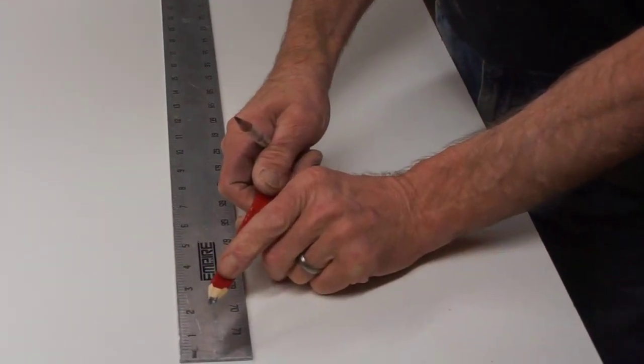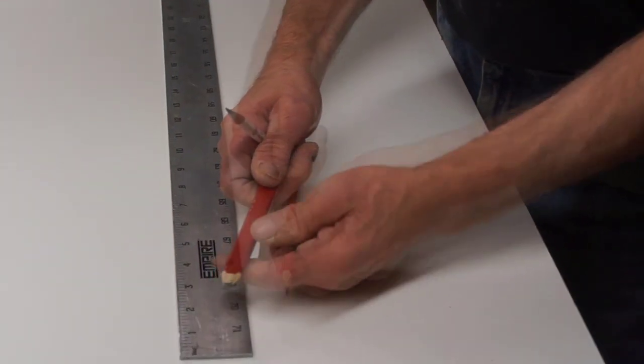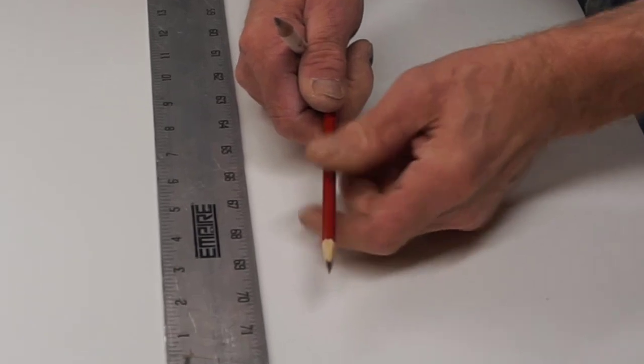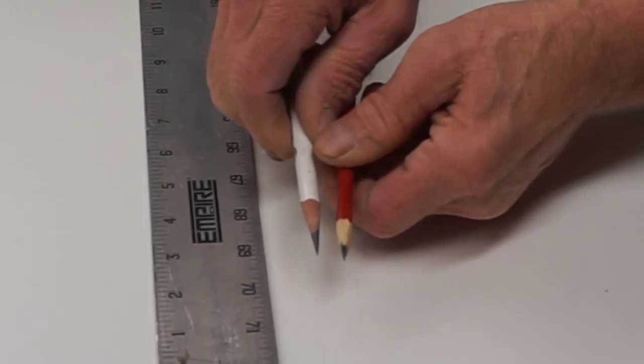Even though the carpenter pencil lead looks thick and stubby, when it's turned on edge, you can see it's razor sharp. A similar sharpness to this round pencil.